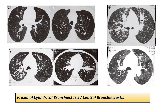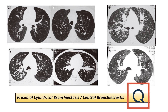Coming to certain CT scan findings: the CT scans shown are all demonstrating central bronchiectasis, that is proximal cylindrical bronchiectasis, which is characteristic of ABPA. This is a point you cannot miss, and it was also a differentiating option in our question.